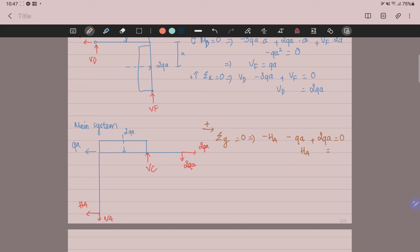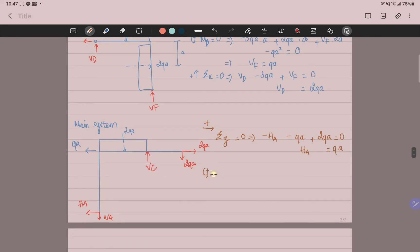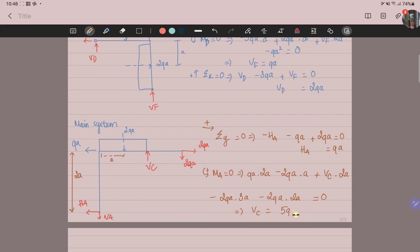Moment at A equals zero. You have QA times 2A, because the length here is 2A, minus 2QA times A. Here, 2QA times A is the length. Plus VC multiplied by 2A minus 2QA multiplied by 3A minus 2QA multiplied by 2A. You can have VC equals 5QA.